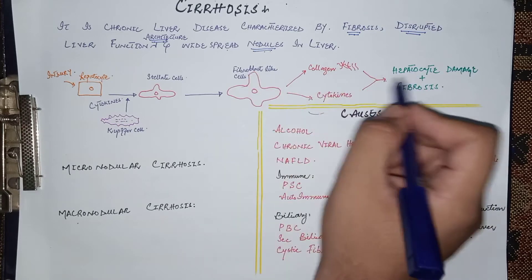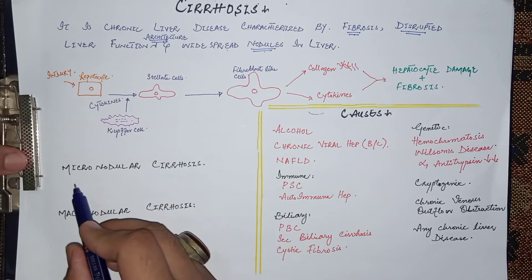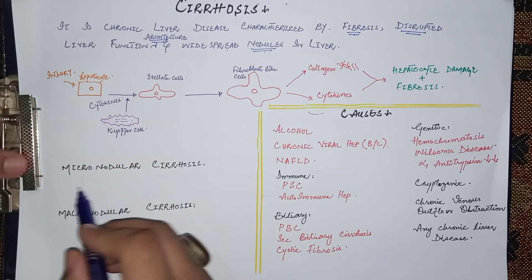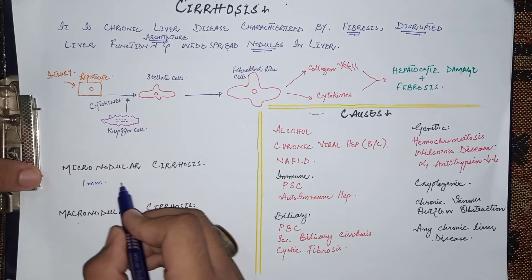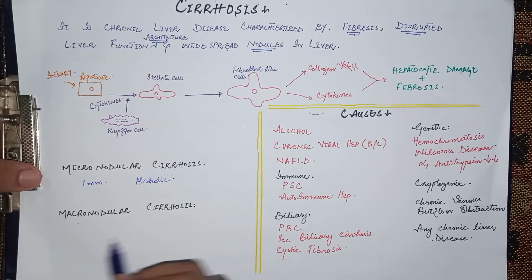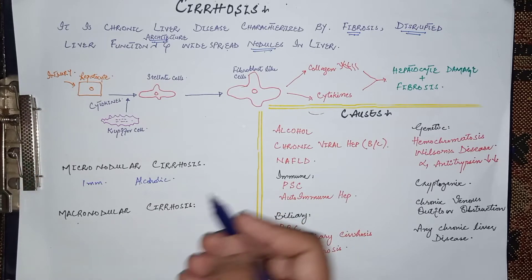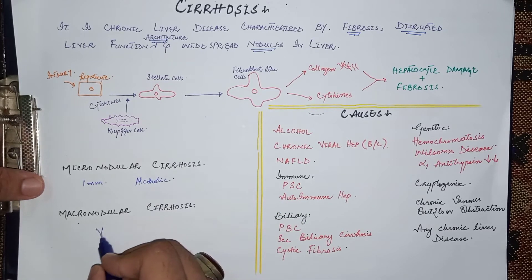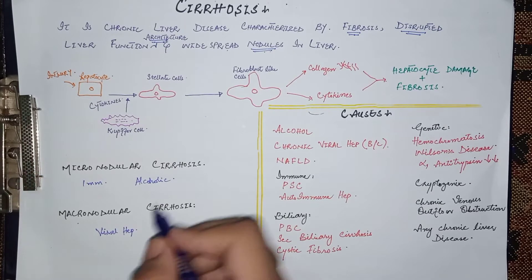Histologically, cirrhosis is classified into micronodular or macronodular cirrhosis. In micronodular cirrhosis, the nodules are usually one millimeter in diameter and it is more common in alcoholic cirrhosis. Macronodular cirrhosis has nodules of various sizes and is more common when the cause is viral hepatitis.